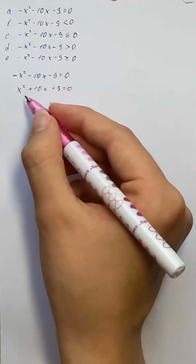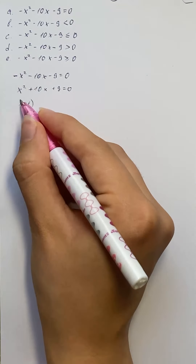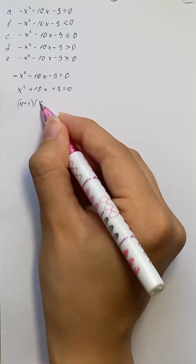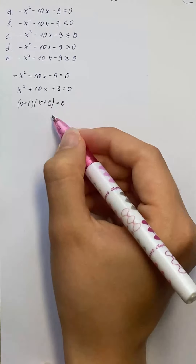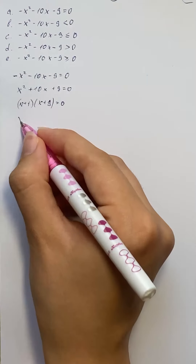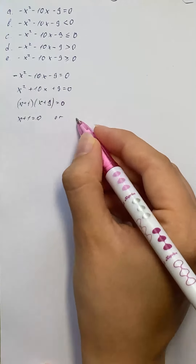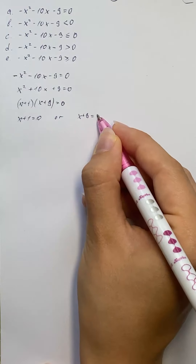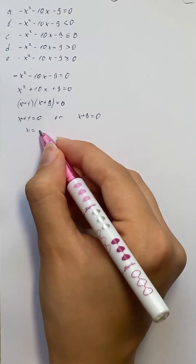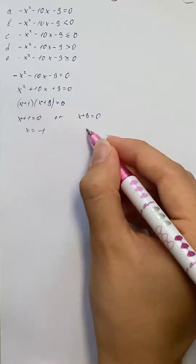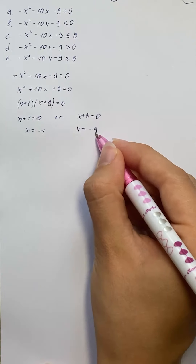Now we're going to factor this, so we get x plus 1 times x plus 9 equals 0. That means x plus 1 equals 0 or x plus 9 equals 0, giving us x equals negative 1 and x equals negative 9.